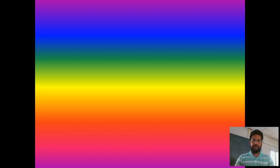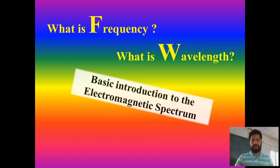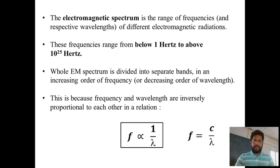Today we will focus on some very basic concepts of what is frequency, what is wavelength, and then a basic introduction to the electromagnetic spectrum. The electromagnetic spectrum is a range of frequencies and respective wavelengths of different electromagnetic radiations. It is just a compilation of all the electromagnetic radiations.